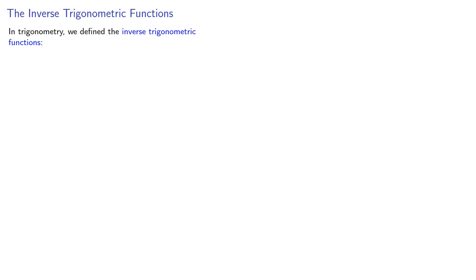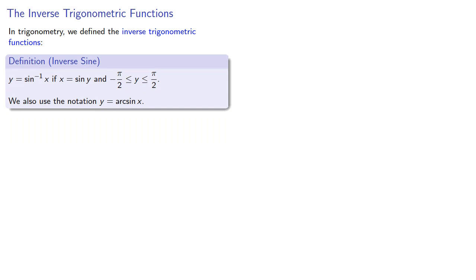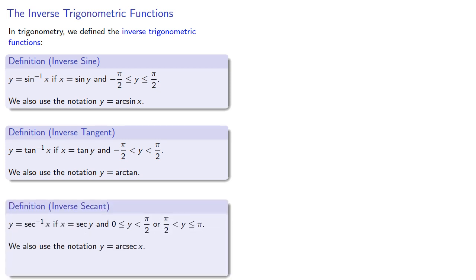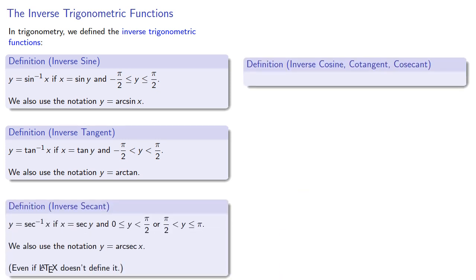In trigonometry, we define the inverse trigonometric functions: the inverse sine, also known as arcsine; the inverse tangent, also known as arctangent; the inverse secant, also known as arcsecant. And while there are inverse cosine, cotangent, and cosecant functions, nobody cares about these.